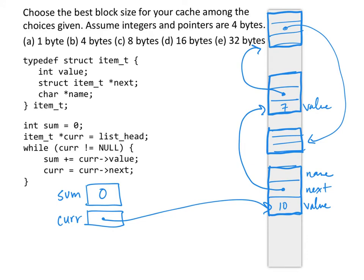Now what the code is doing is traversing the linked list and summing up all of the values. So to begin with, the sum is zero, and after the first iteration of the loop, the sum has the value 10.